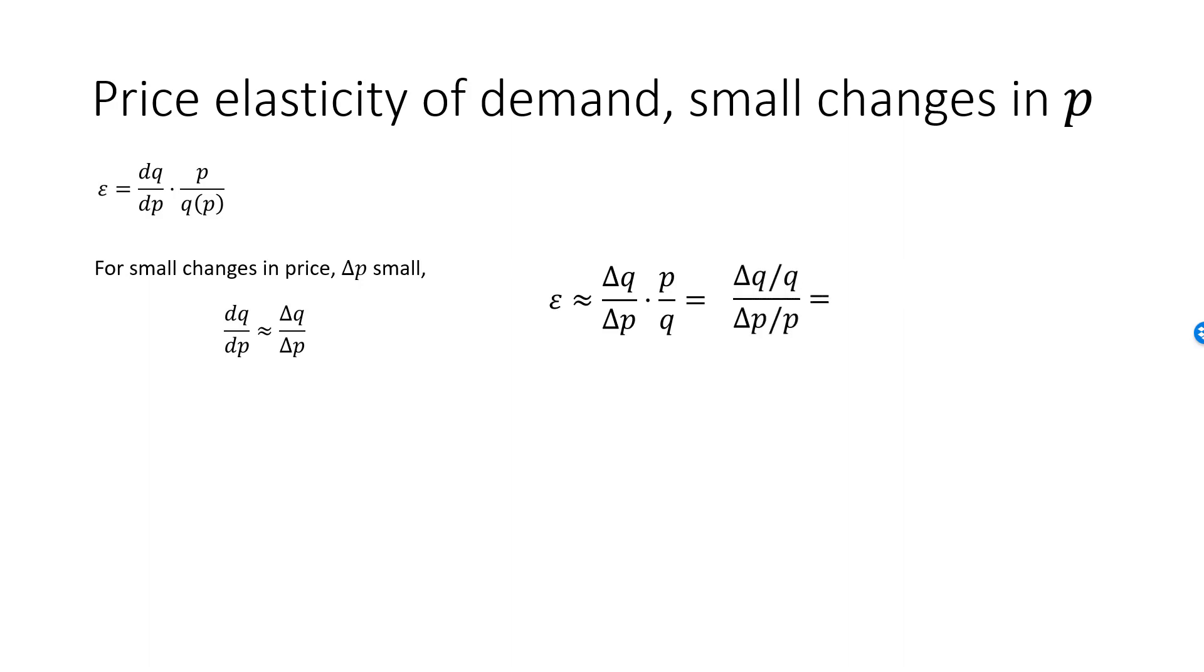Rearranging this equation slightly, we can write this as delta Q over Q divided by delta P over P. We then multiply both sides by 100. Let's focus on the numerator of this expression, delta Q over Q times 100. This is precisely the definition of the percentage increase in Q. Say that our initial Q is 1000, and that we increase Q by delta Q equal to 20. Delta Q over Q is 0.02, and this multiplied by 100 is 2. Quantity has increased by 2%. If delta Q is minus 20, the percentage increase in Q will be minus 2%, which is the same as a decrease by 2%. The same is true for the denominator. Delta P over P times 100 is the percentage increase in P.